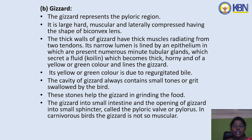The gizzard represents the pyloric region. It is large, hard, muscular, and laterally compressed, having the shape of a biconvex lens. The thick walls have thick muscles radiating from two tendons. Its narrow lumen is lined by epithelium containing numerous tubular glands that secrete a fluid which becomes thick, horny, and yellow or green in color, lining the gizzard. This color is due to regurgitated bile. The gizzard cavity always contains small stones swallowed by the bird to help grind food. In carnivorous birds, the gizzard is not so muscular.